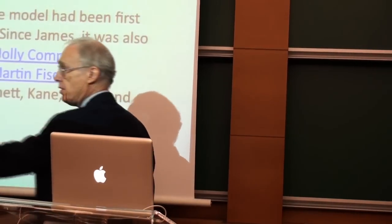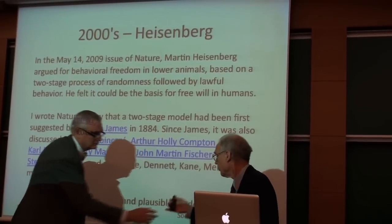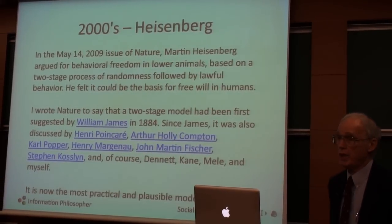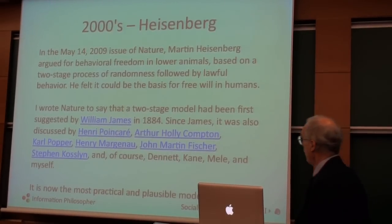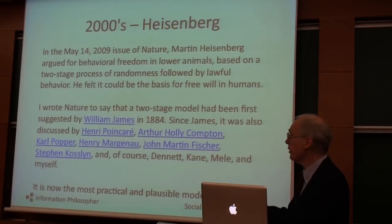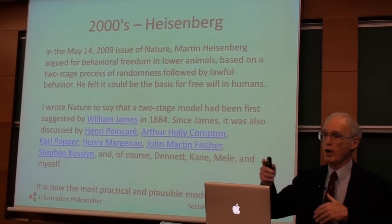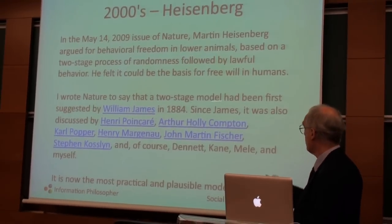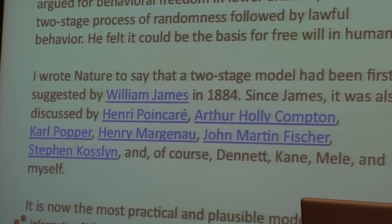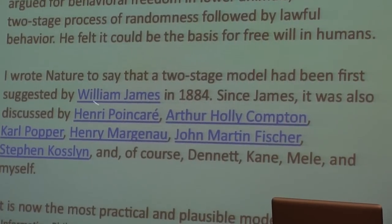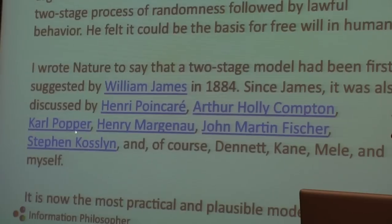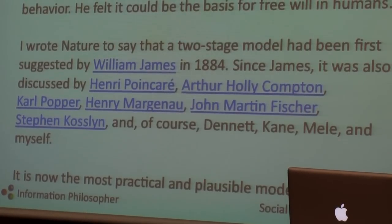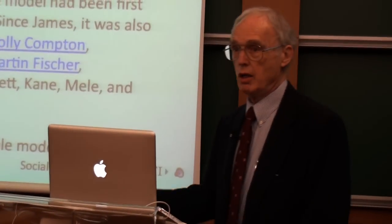Then in the 2000s, just last year, Martin Heisenberg argued in Nature, last May, for what he and I have agreed to call behavioral freedom, based on a two-stage process of randomness followed by lawful behavior. He felt it could be the basis for free will in humans. I wrote to Nature — my first philosophical publication — to say that a two-stage model had been first suggested in 1884 by William James, the great psychologist and philosophy professor at Harvard. Since him, it was also discussed by Henri Poincaré, Arthur Holly Compton, Karl Popper, Henry Marganau, John Martin Fisher, Stephen Kostlin, and of course Dennett, Kane, Mealy, and myself. I'd like to argue that it is now the most practical and plausible model for a kind of free will process.